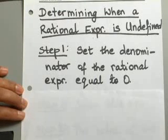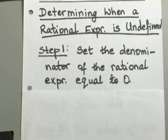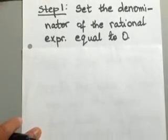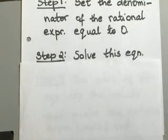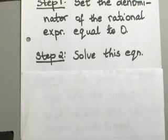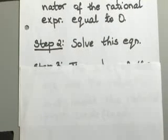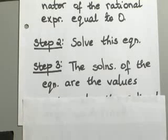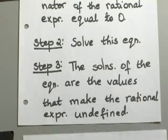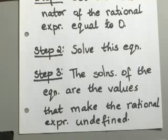The first thing you would do is take your rational expression and set your denominator equal to 0 — only your denominator, not the whole expression. Set it equal to 0. Then you solve that equation, because whatever you have in the denominator equals 0, go ahead and solve that equation for your variable. The solutions of the equations are the values that make the rational expression undefined.